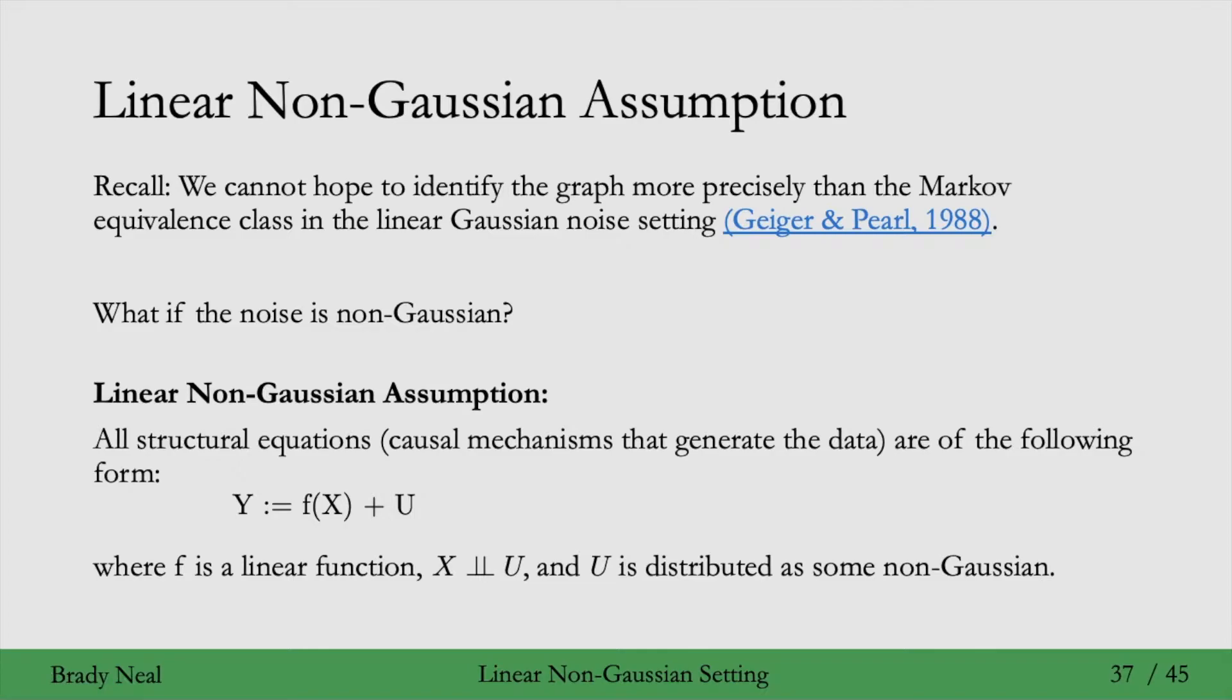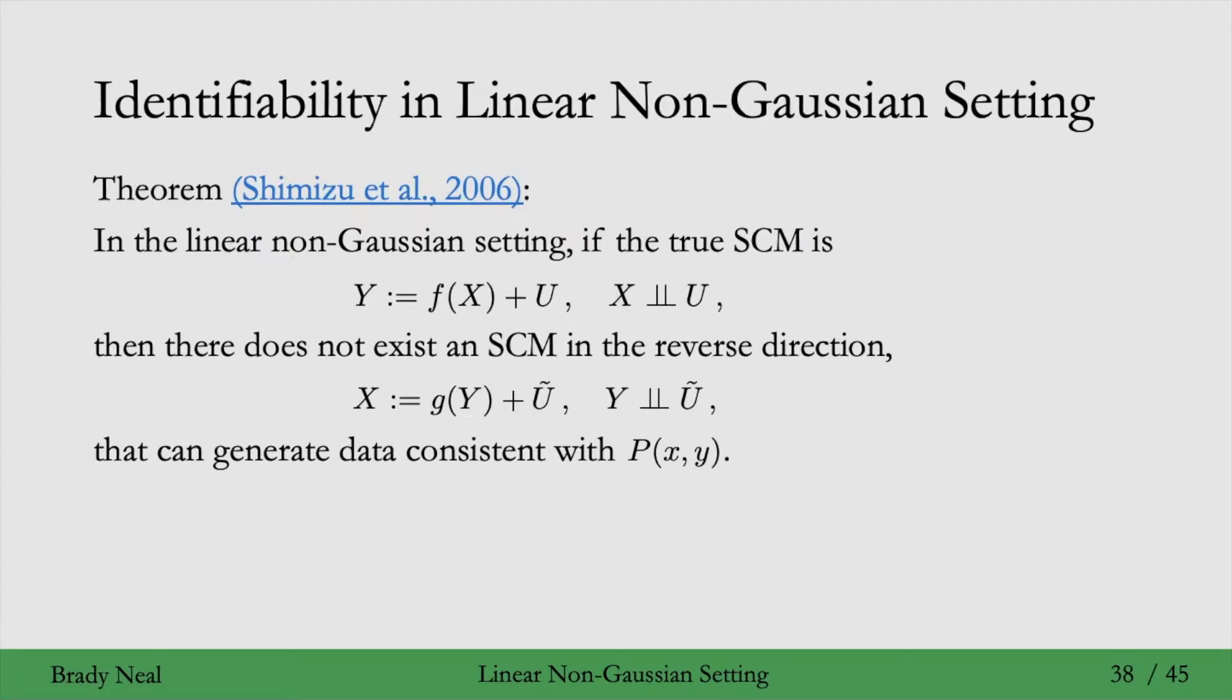If U were Gaussian here, we have this impossibility result that we can only do as well as the Markov equivalence class. But if U is non-Gaussian, we're going to be able to exactly identify the graph. That's what this theorem from Shimizu et al. 2006 states.